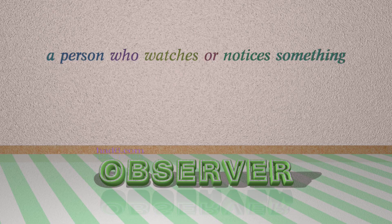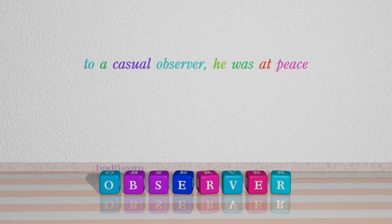Number 3: Observer. Which means a person who watches or notices something. For example: to a casual observer, he was at peace.